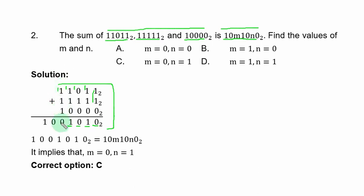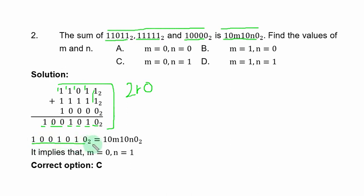Continuing the addition: 1 + 1 + 1 + 1 = 4. We can't write 4 in binary, so divide 4 by 2 giving 2 remainder 0 — put down 0 and carry 2. Divide 2 by 2 giving 1 remainder 0 — put down 0 and carry 1. This gives the final binary result to compare against the given expression.